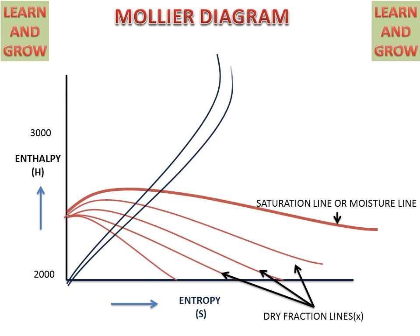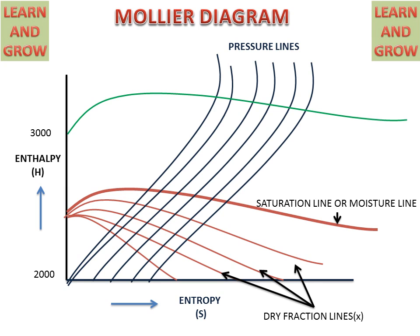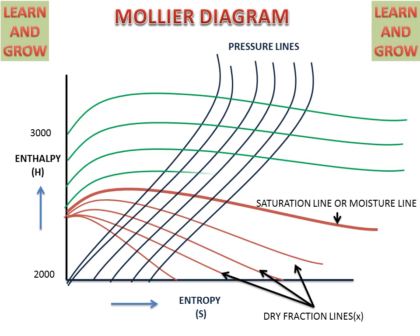The blue lines going upward are called pressure lines — they show us the pressure. The green lines going from left to right are called temperature lines — they show us the temperature.